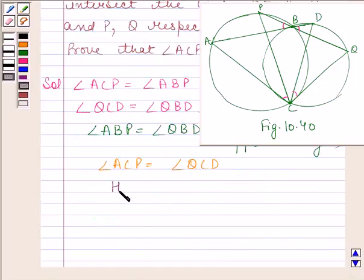Hence, we have proved that angle ACP is equal to angle QCD. This completes the session. Bye and take care.